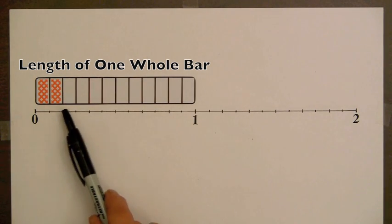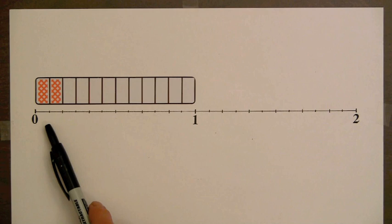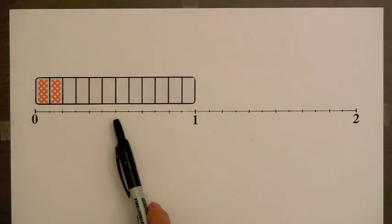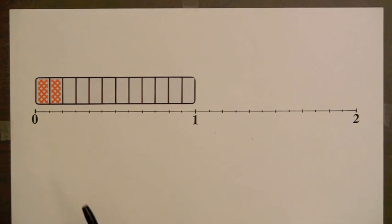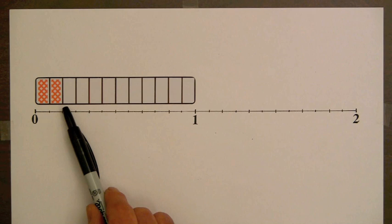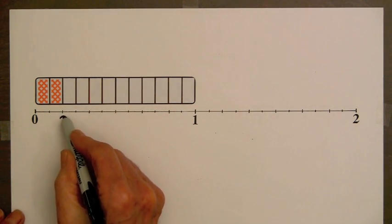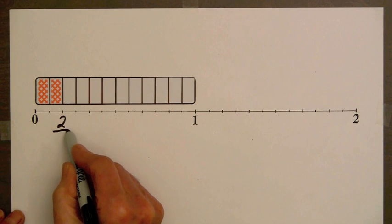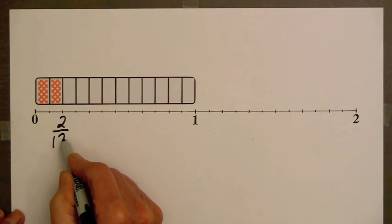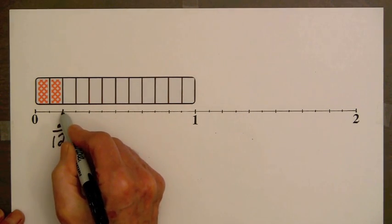So, we can use the shaded amounts of the orange bars to write the numbers under the marks on this number line. Since two parts of this bar are shaded, the shaded amount represents the fraction 2 twelfths. So, we can write 2 twelfths beneath this mark.